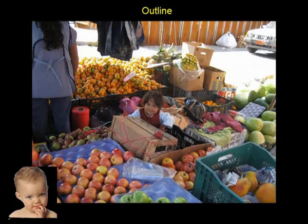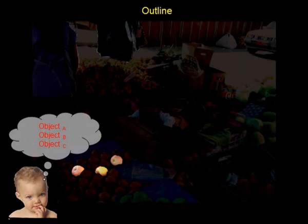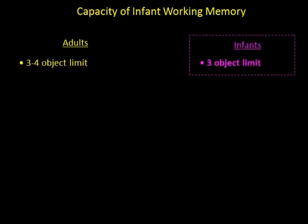These data from my lab and others suggest that at any one time slice, what's stored in an infant's or adult's working memory is actually quite little — something like object representation A, object representation B, object representation C. This limit in adults is surprising; it doesn't feel like we're so limited under normal circumstances. When you tell subjects this, they deny it's true. One reason we don't feel the force of this strict memory limitation is that as adults we have mechanisms for circumventing it.